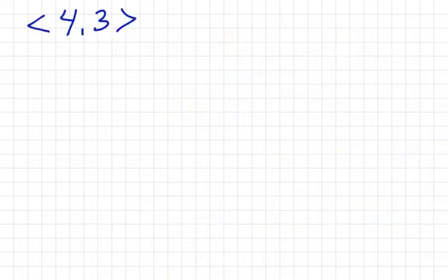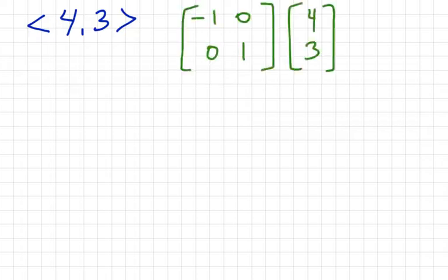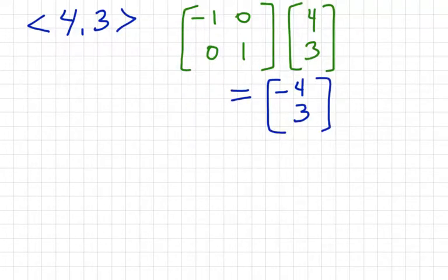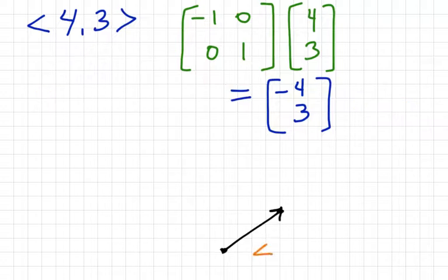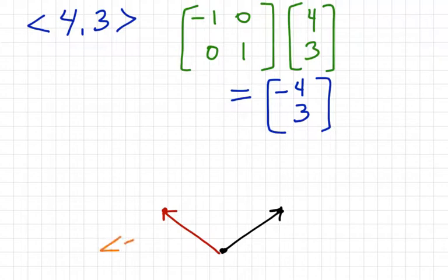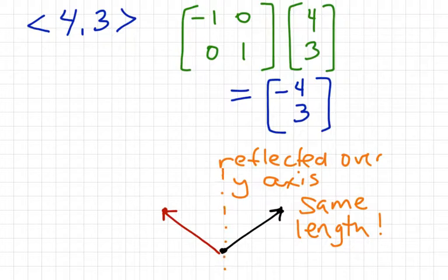Next, transform the vector (4, -3) using the transformation matrix (-1, 0, 0, 1). When we do the matrix multiplication, we get (-4, 3). Graph the original vector (4, -3) and then the transformed vector (-4, 3) from the same starting point. You might notice a similarity with the first example — it's been reflected over the y-axis. Notice that the length didn't change this time.